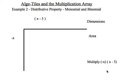Carrying on, in this example I'd like to multiply negative x times x minus 3. Again, remembering these are lengths and widths, just dimensions of a rectangle. So negative x will be represented by a red tile. x minus 3.